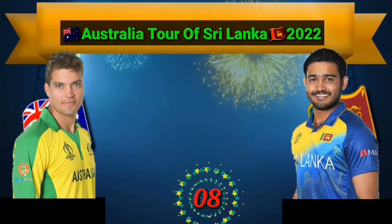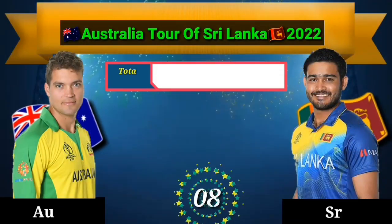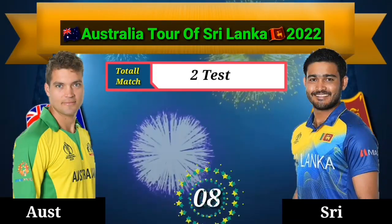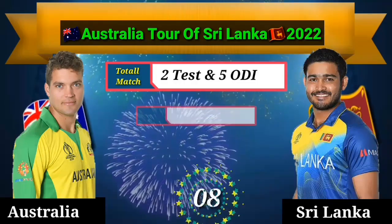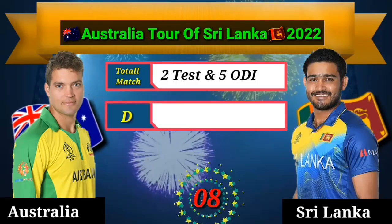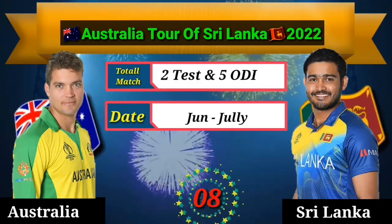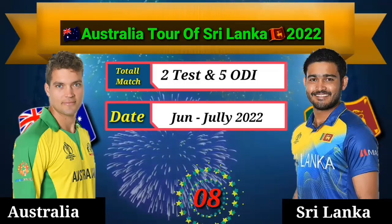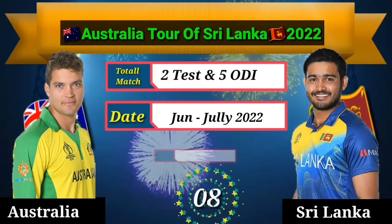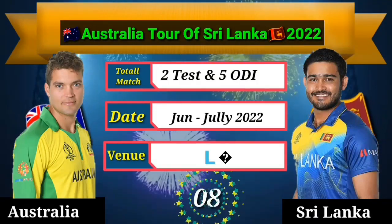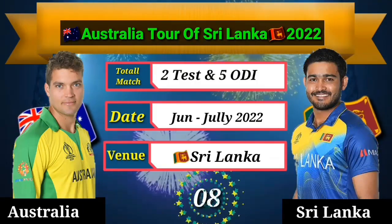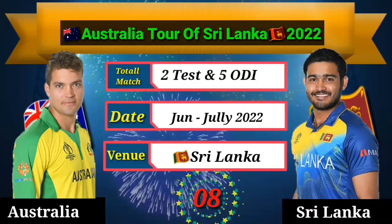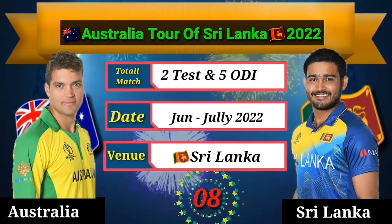Australia Cricket Team Upcoming Series No. 8: Australia Tour of Sri Lanka 2022, total matches 2 Tests and 5 ODI series, date June to July 2022, venue: Sri Lanka.